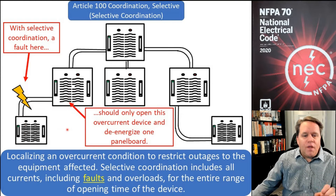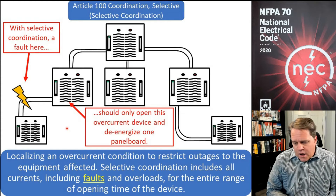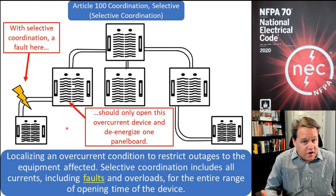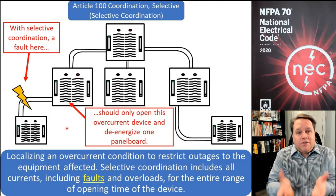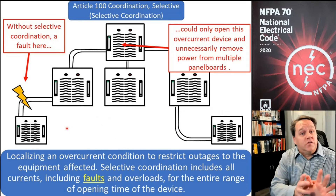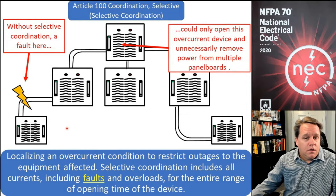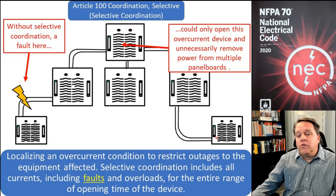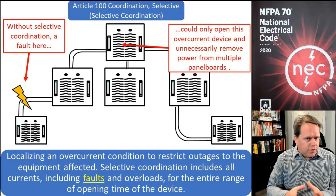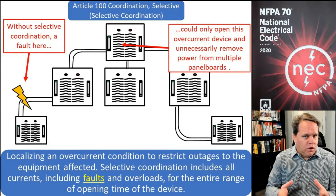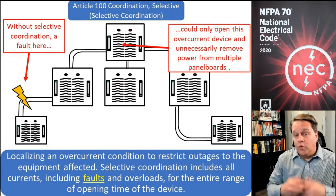Selective coordination is always a good goal in a design for obvious reasons — if you have a fault, you only want to lose as little as possible. If it wasn't selectively coordinated, the 1200 amp main could open and we could lose the entire building. You certainly want to selectively coordinate when you can, although sometimes it may be more difficult than it's worth. There are times in the code where we're required to selectively coordinate.